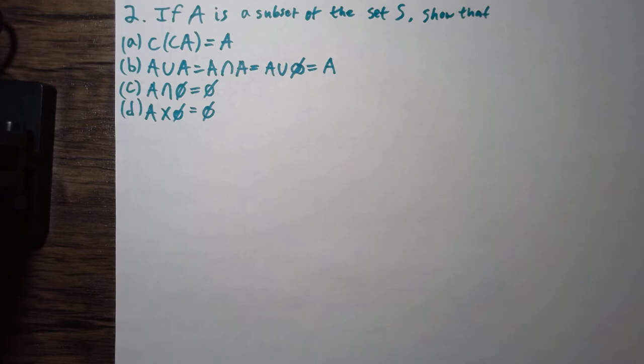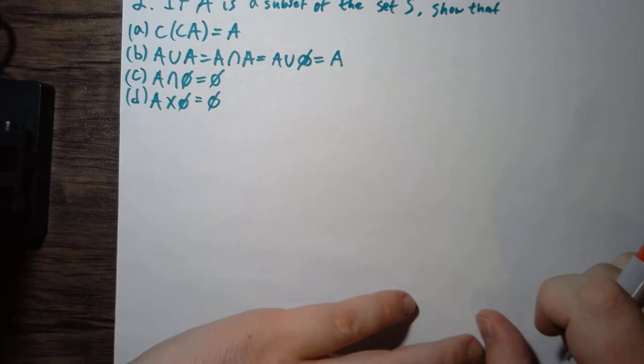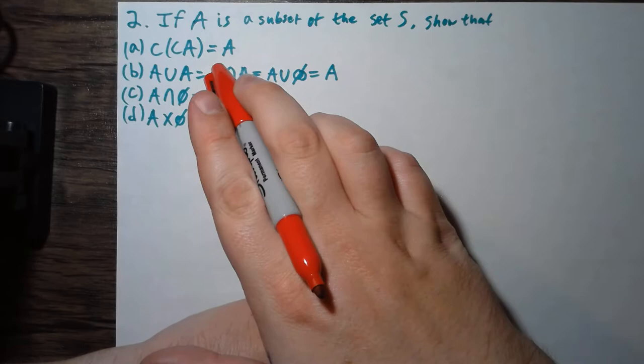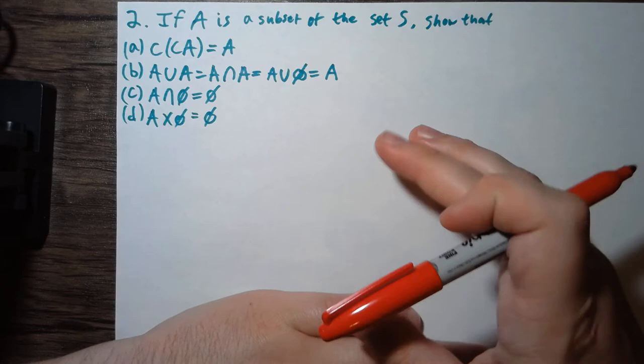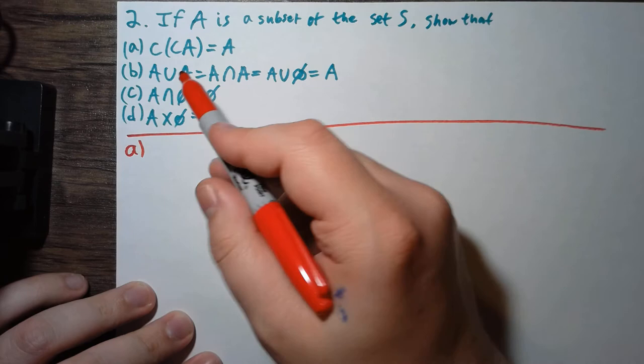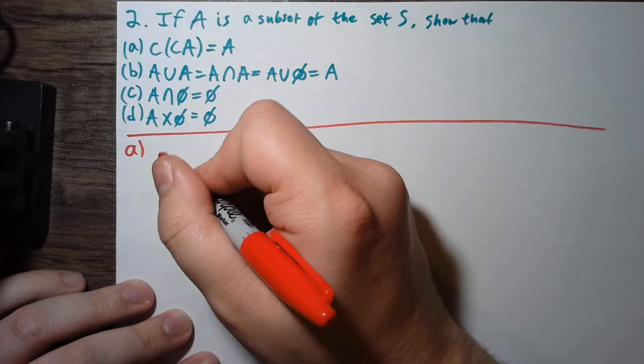Alright, so we're going to do problem two out of chapter one of Introduction to Analysis by Rosenlicht. This is more set theory. In this problem, we're assuming A is a subset of the set S. We want to show a bunch of different statements, so let's do the first one — part A — we want to show the complement of the complement of A is equal to A.